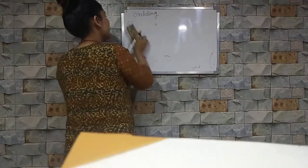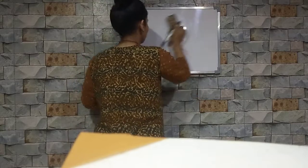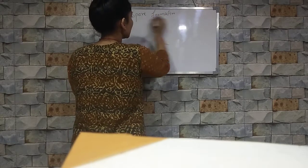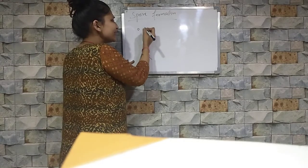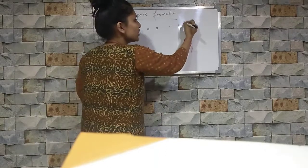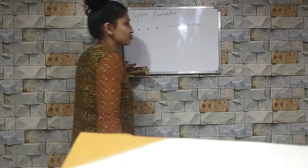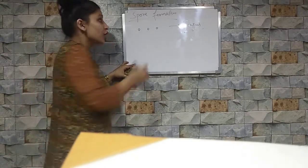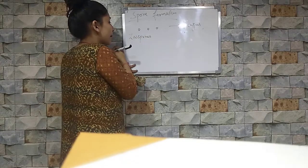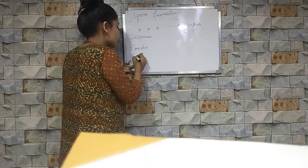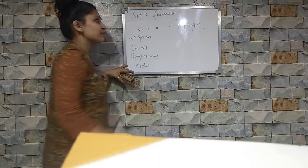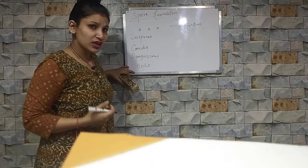This is our spore formation. Spore formation occurs in fungi. Spore formation through asexual reproduction involves different types of spores: zoospores, conidia, sporangiospores, and oidia. These are different types of spores with differences in their structure and mode of reproduction.